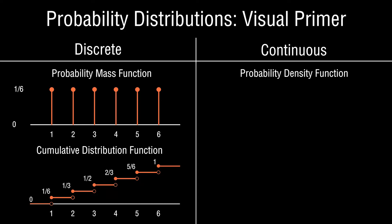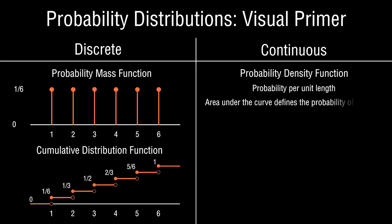A probability density function you have likely seen before, but it lacks the intuition that underlies the probability mass function for discrete random variables. The technical way to view a probability density function is as a measure of probability per unit length, where the length corresponds to the associated outcomes. To determine the probability of an event of interest, we have to compute the area underneath the probability density function.